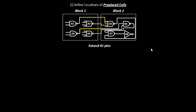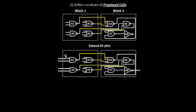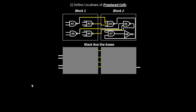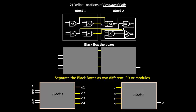We'll extend the IO pins — we already have the output pins of block one, which are the input pins of block two, and we'll extend them. Block one will have four input pins and four output pins. Similarly, block two will have four input pins and one output pin. Let's fill up these boxes with some colors — let's black-box them. So we have two black boxes, each with some internal logic, and each box has got its pins: block one has input pins A, B, C, D and output pins O1, O2, O3, O4; block two has input pins A, B, C, D and one output pin O.